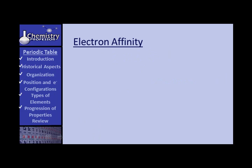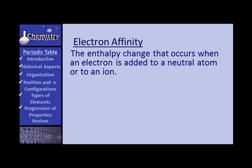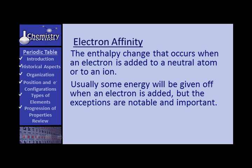Let's look now at electron affinity. Electron affinity is the enthalpy change that occurs when an electron is added to a neutral atom or to an ion. Think about it now. You're going to take a neutral atom or an ion and you're going to have it take on an additional electron. What is the enthalpy change that's going to be needed there? Usually some energy is given off when an electron is added. But the exceptions, the exceptions are really important.